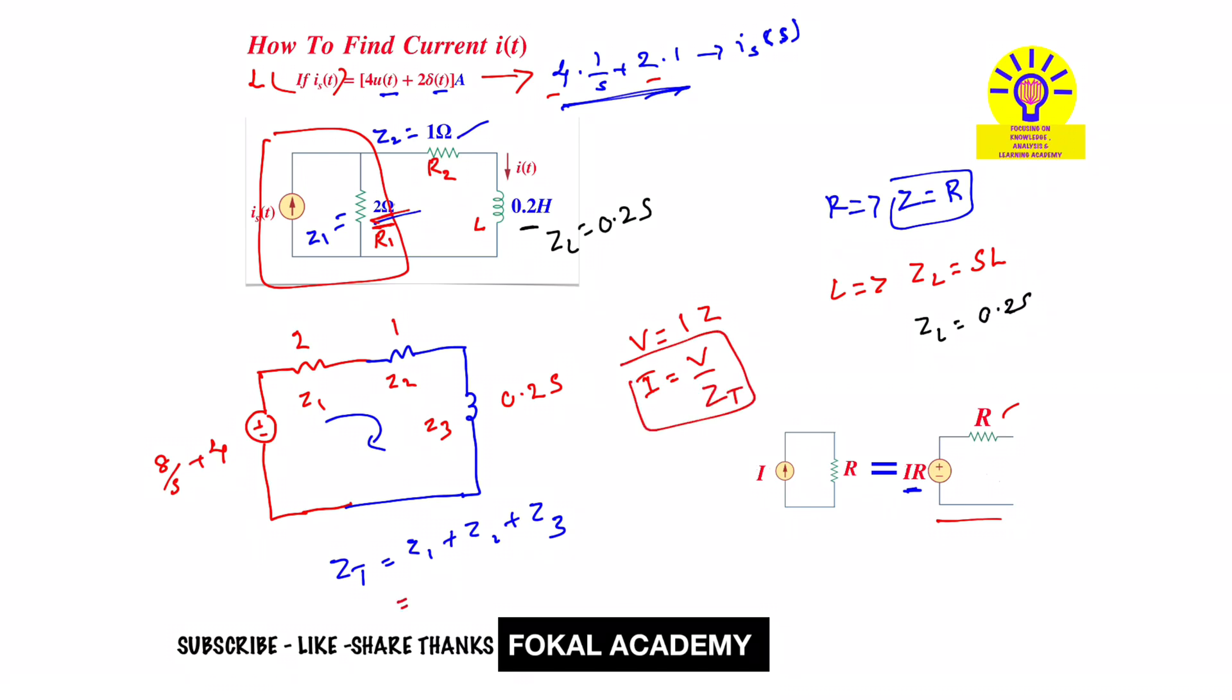Now substitute Z1 here. So 2 plus 1 is 3, so 3 plus 0.2 S. This is overall impedance. Now substitute impedance and voltage source in equation. We get current I of S, and V means V of S.